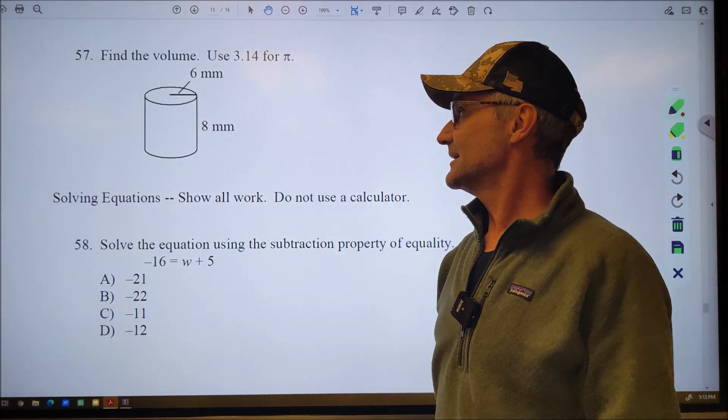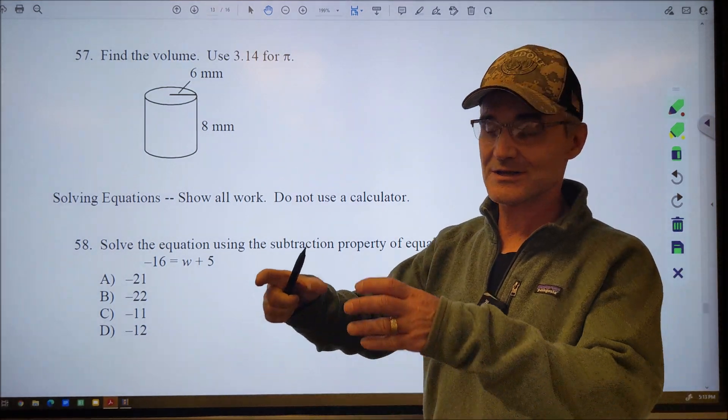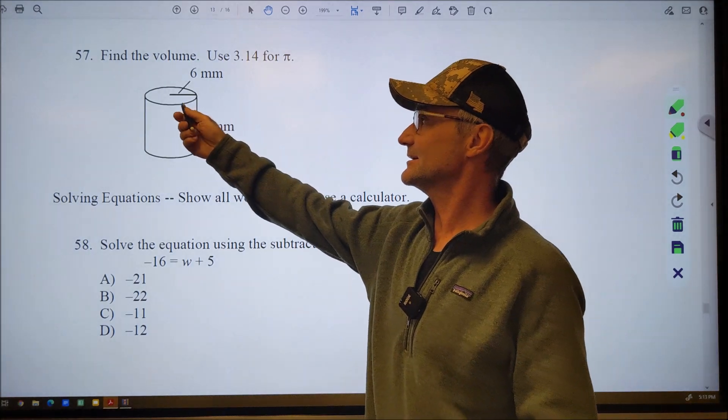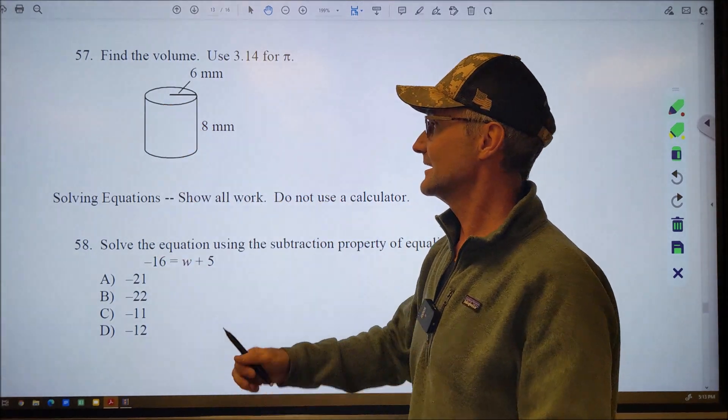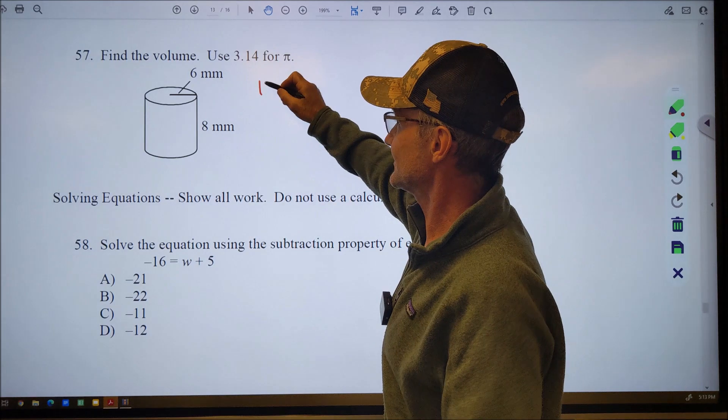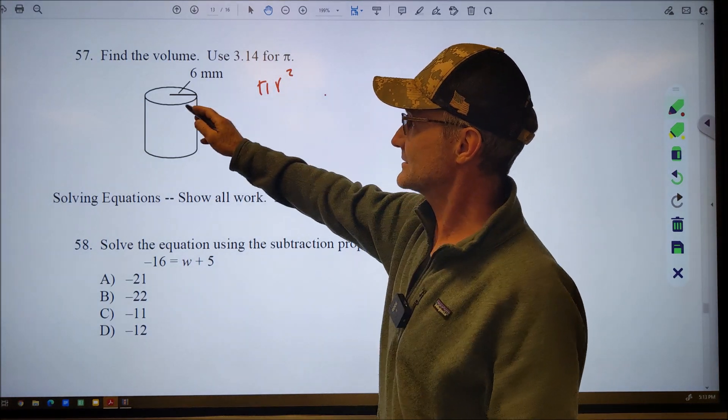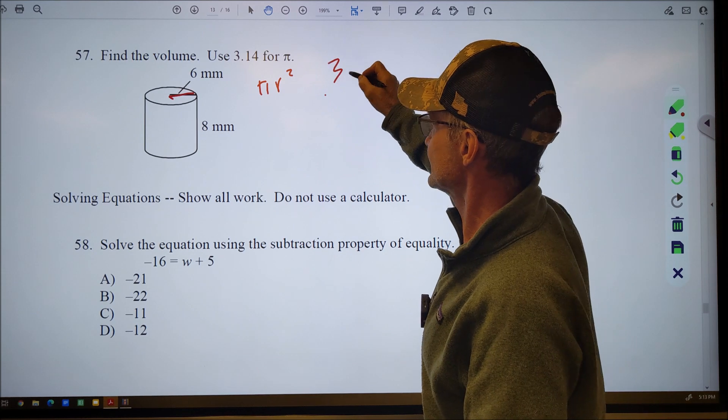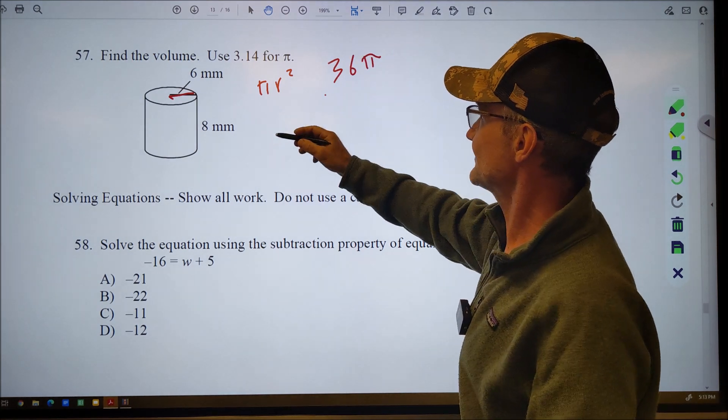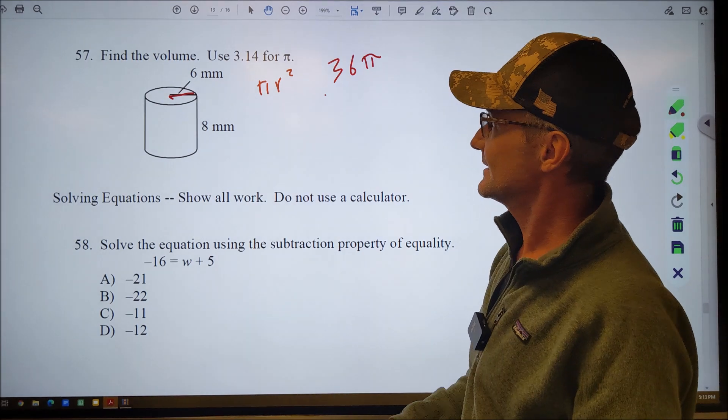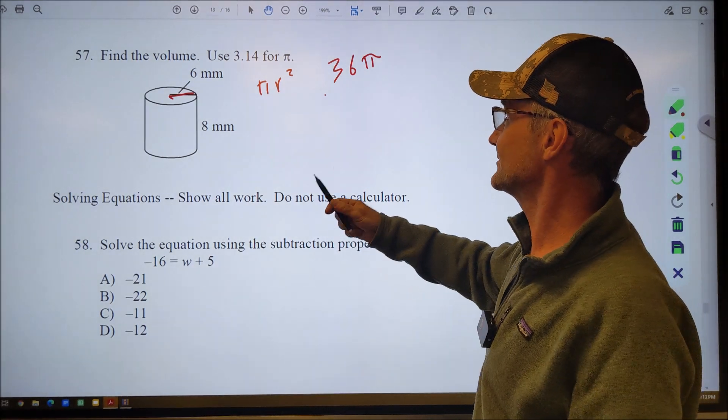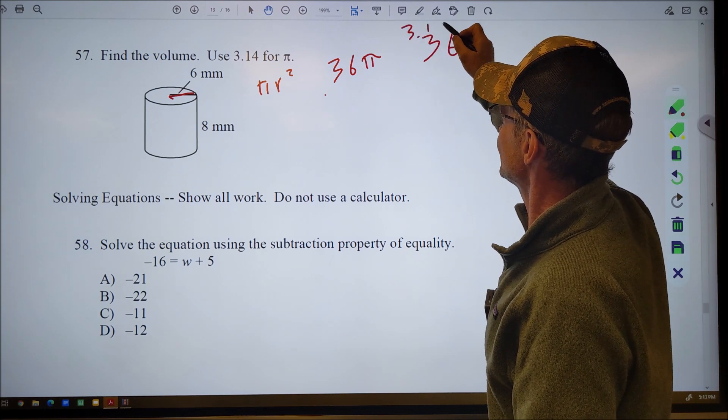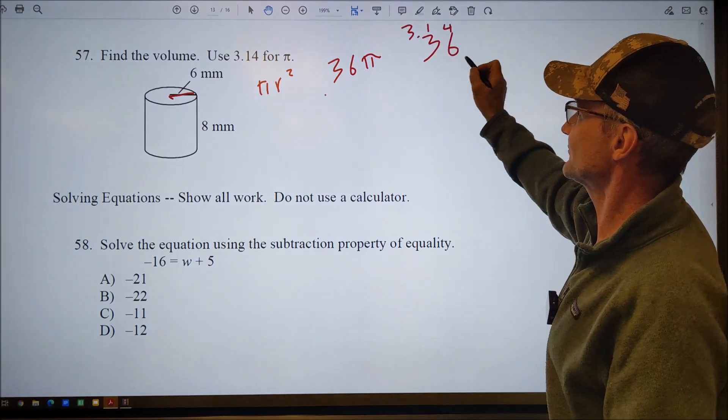57. Find the volume of that cylinder. It's really the same thing as the last one, but the base area is not a square. It's now a circle. So then multiply it by the height. So again, pi r squared. r is given right here at 6. 6 times 6, 36. So I have 36 pi times my height of 8. There's no multiple choice, and I have to do all my work. So I'm going to go 36 times 3.14. This is an approximation for pi.